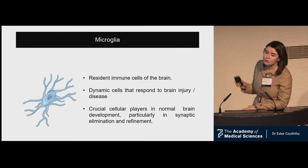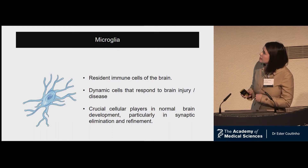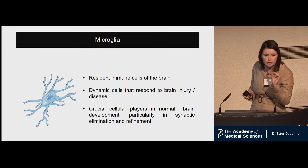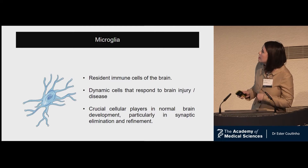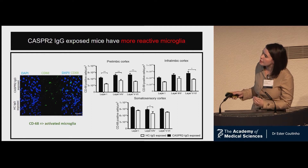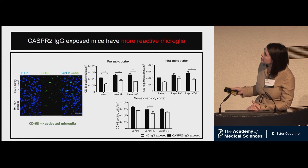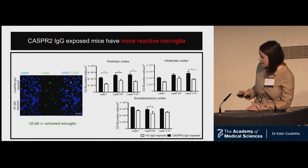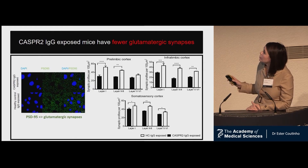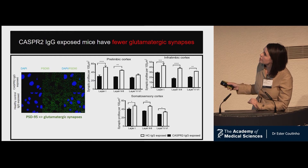We also looked at microglia, the resident immune cells of the brain. They are dynamic cells that respond to brain injury or disease, and are known to be crucial players in normal brain development, particularly in synaptic refinement and elimination. We found a striking increase in activated microglia in CASPR2 IgG-exposed mice throughout all cortical layers in the medial prefrontal cortex and the somatosensory cortex. Additionally, when quantifying glutamatergic synapses, we saw a loss of glutamatergic synapses in CASPR2 IgG-exposed mice in the same cortical areas.